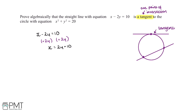Now we can substitute 2y plus 10 in place of x in the circle equation. This gives us that 2y plus 10, all squared, plus y squared is equal to 20.